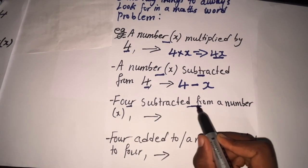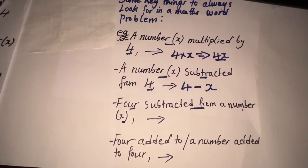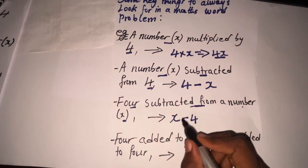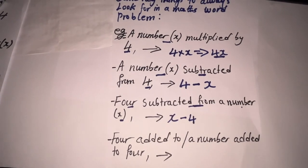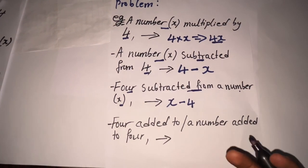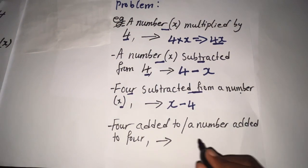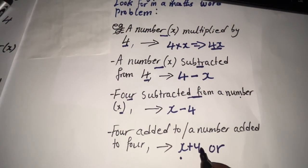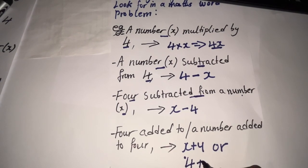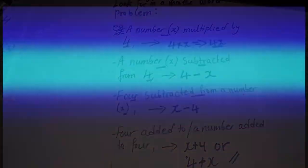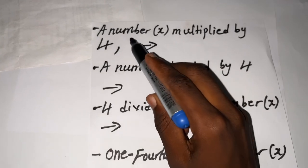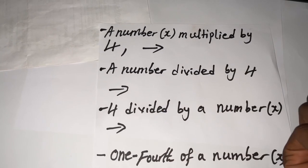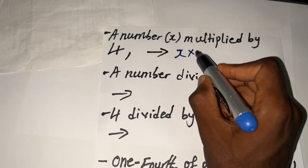The next one reads: '4 subtracted from a number.' This is different from the previous one. Here the unknown number is x, so 4 is being subtracted from x, giving us x minus 4. The next one is 'a number added to 4' — it's all the same whether you write it as x plus 4 or 4 plus x. For multiplication, 'a number x multiplied by 4' gives either 4 times the number or the number times 4, so we write 4x.